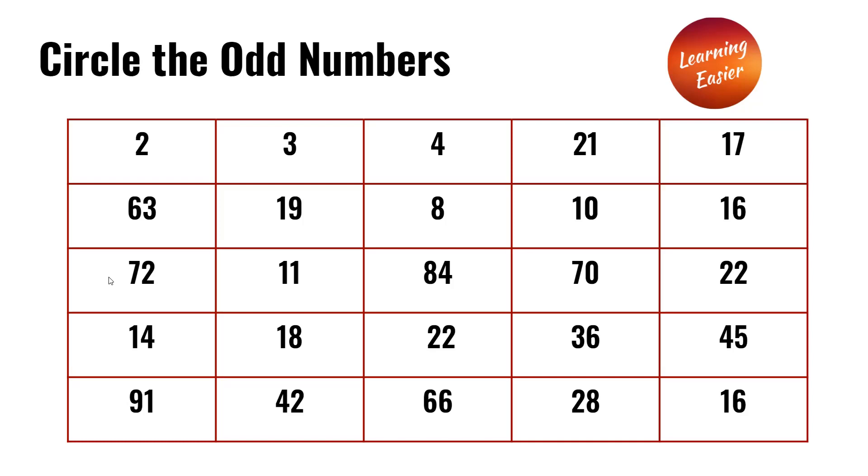Next row, in the third row we have 72, 11, 84, 70, and 22. In the third row the odd number is 11.